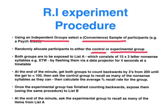After the experimental group has finished counting backwards, I'm going to expose them to a different list of fifteen three-letter nonsense syllables. Then at the end of that minute, I'm going to ask them to recall as many items as they can from the original list, to see if list B has interfered with list A retroactively.